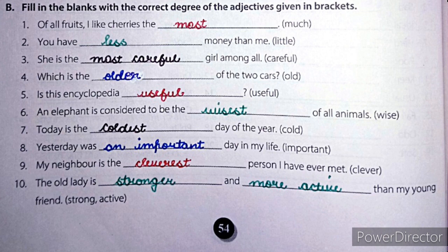Number 6: an elephant is considered to be the wisest of all animals — wisest is the superlative degree comparing all animals. Number 7: today is the coldest day of the year.